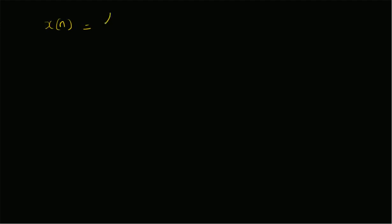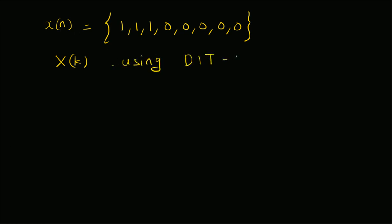Welcome. In this video we will look at an example illustrating how to apply the Decimation-In-Time (DIT) FFT algorithm to find the 8-point DFT sequence of a given 8-point signal x[n], using the radix-2 DIT-FFT algorithm. To determine the DFT sequence using this algorithm, we need to draw the butterfly diagram.